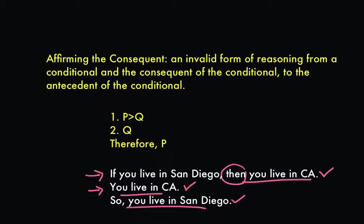Taking a minute to think about the reasoning in this argument, you can clearly see that it's bad reasoning. The mere fact that premises one and two are true does not entail the conclusion. If you live in San Diego, then you live in California; you live in California, therefore you live in San Diego — it just doesn't follow. It could be the case that premises one and two are true but you don't live in San Diego. Maybe you live in San Francisco, or Redding, or Los Angeles — any place in California other than San Diego — and premises one and two could still be true.